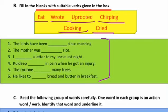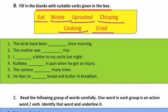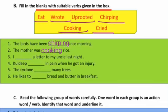Chaliye ab pehla sentence dekhte hain: 'The birds have been ___ since morning.' Birds subah se kya kar rahi hain? Pyaari pyaari birds to chah chahati hain — so chirping aata hai yahan. Next: 'The mother was ___ rice.' Mother rice ko kya kar rahi hai? Cook karti hai — so 'mother was cooking rice'.